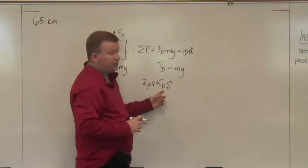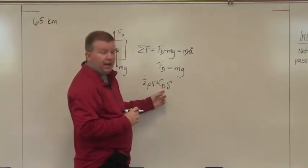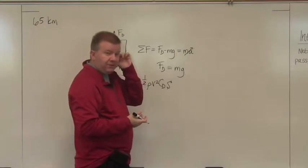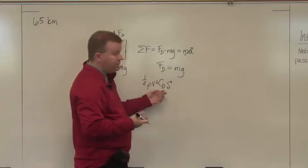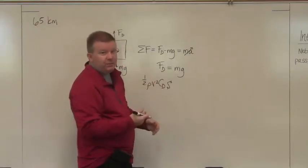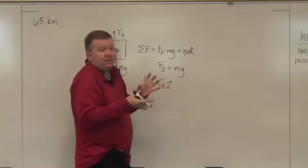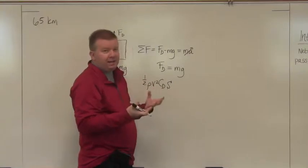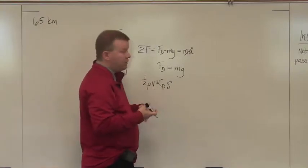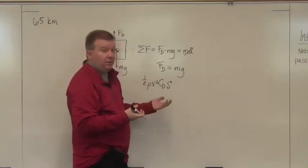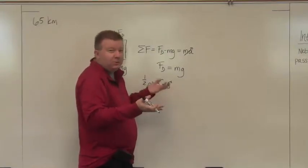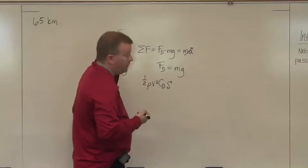We know that C sub D is actually a geometric term. You can Google drag coefficient of different objects. You should get a table and you can match pretty close to what your payload looks like. It's not going to be exact because the only way we could do an exact drag measurement would be to put it in a wind tunnel, and we're not going to do that. Look online and get a close approximation, and that's okay.